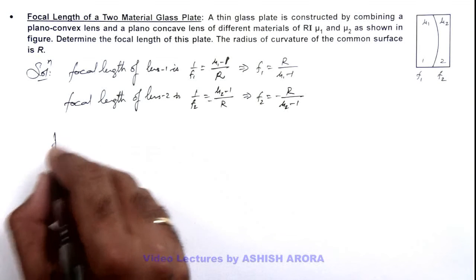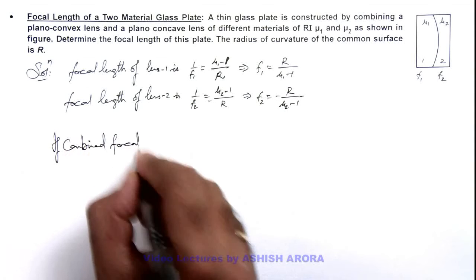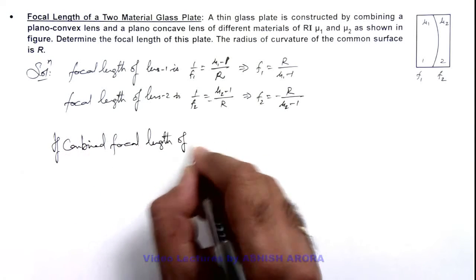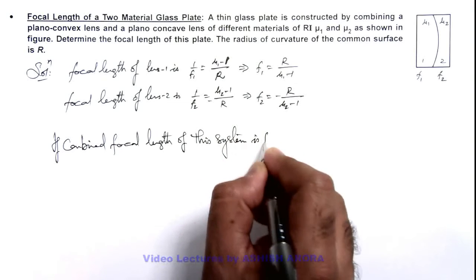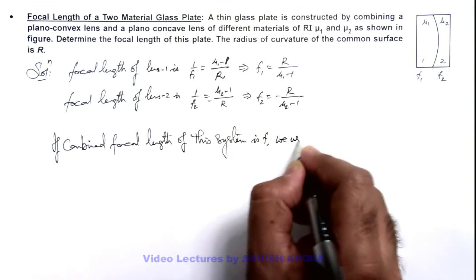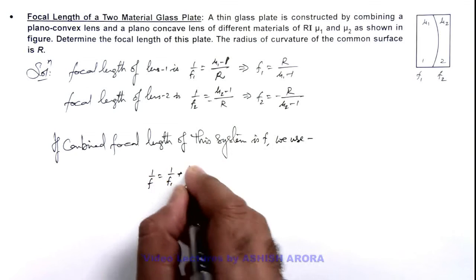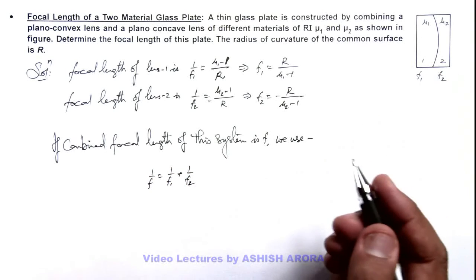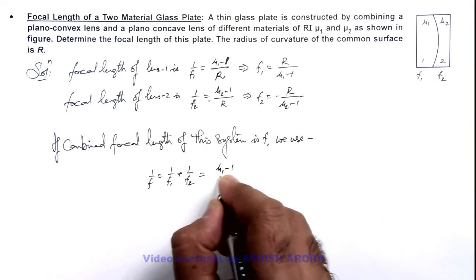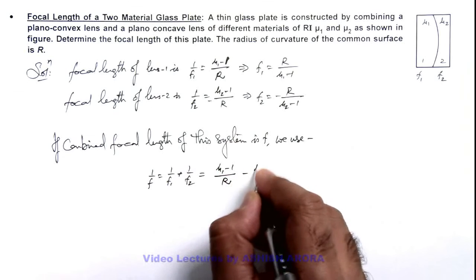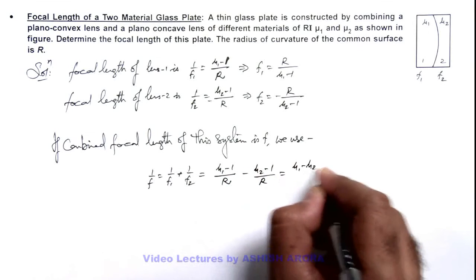So we can write, if combined focal length of this system is f, here we use 1 by f is equal to 1 by f1 plus 1 by f2, as these are two thin lenses placed in contact. So this can be given as mu 1 minus 1 by r minus mu 2 minus 1 by r, which will give us mu 1 minus mu 2 by r.